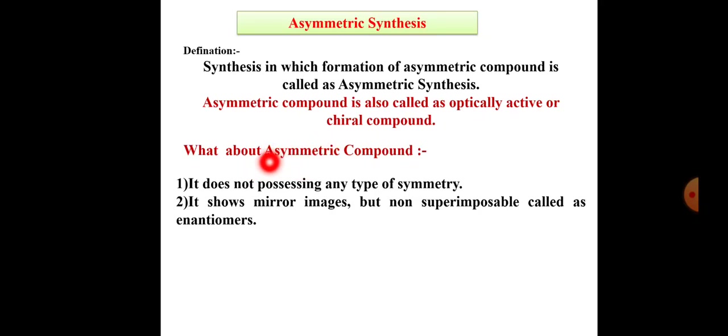What is the meaning of the asymmetric compound? In case of an asymmetric compound, it does not possess any type of symmetry. The second thing is that it shows mirror images, but they are non-superimposable — these are called enantiomers.